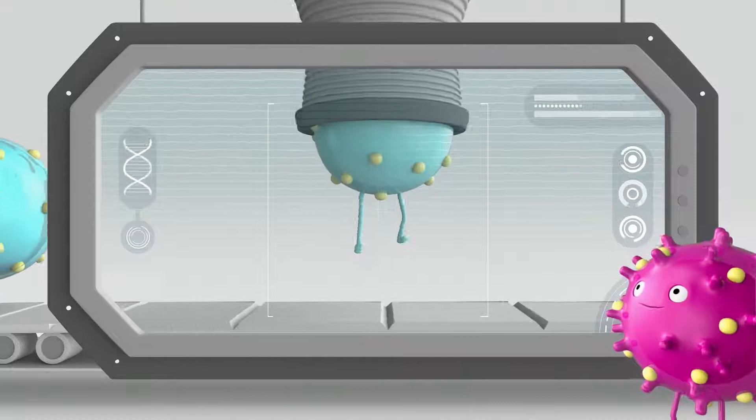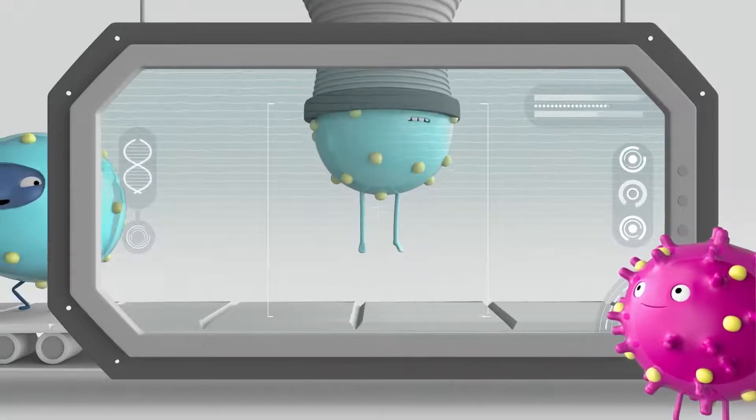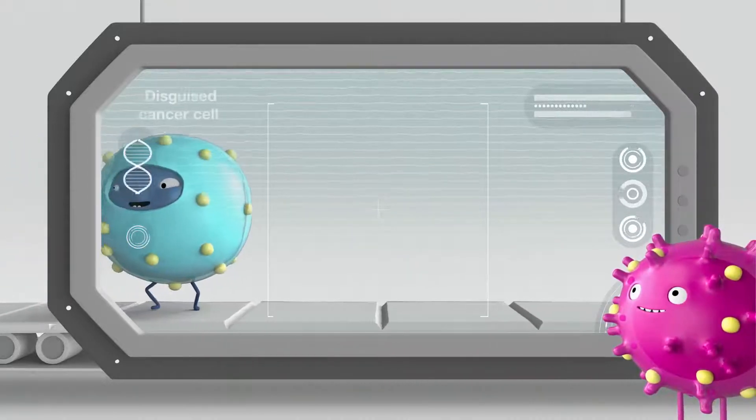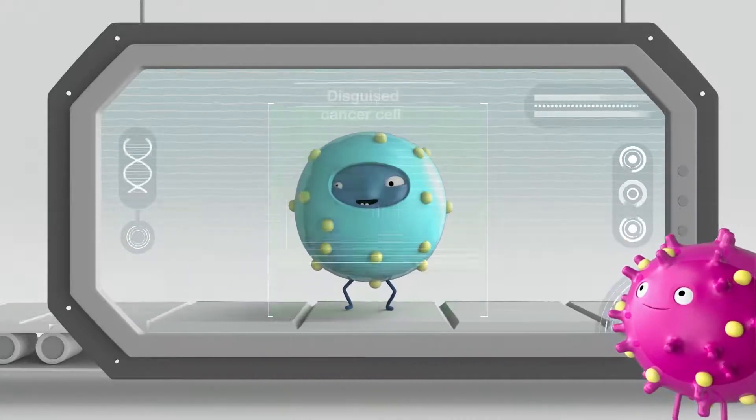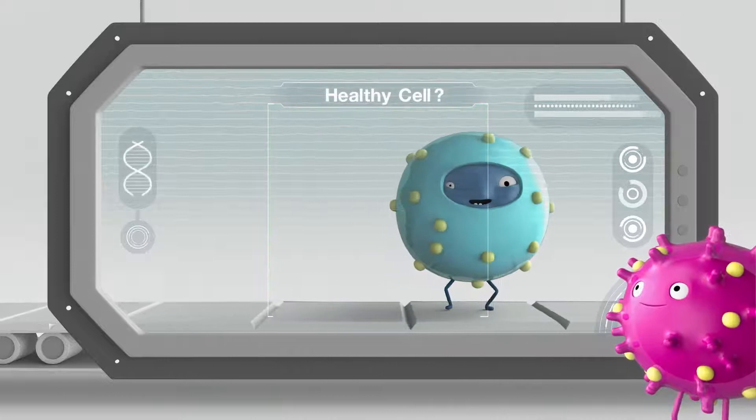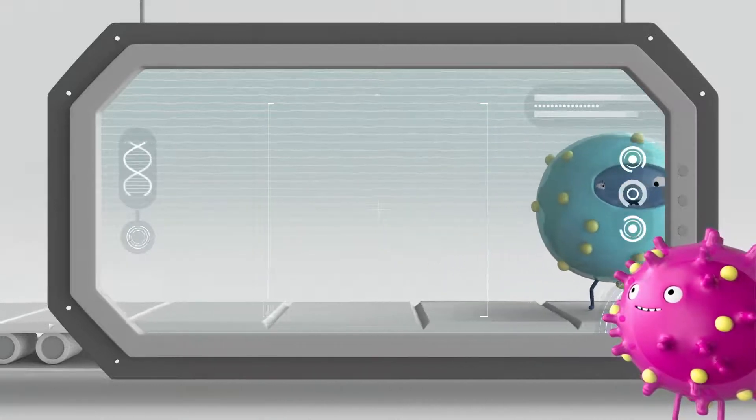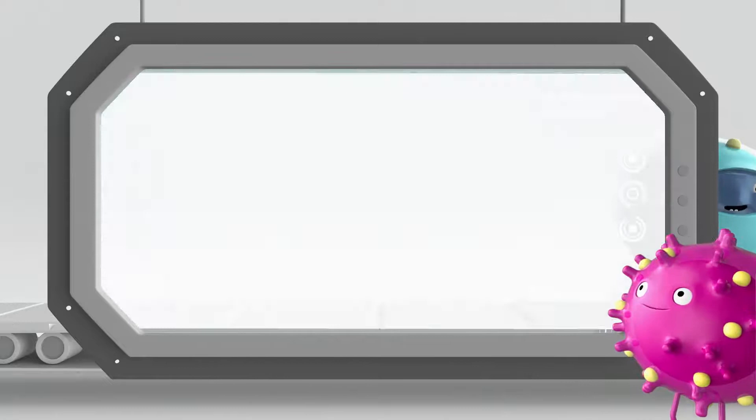Otherwise, your healthy cells could get damaged by mistake. Unfortunately, some cancer cells are smart and can use these same checkpoints to their own advantage. This allows cancer cells to hide from your immune system and avoid being destroyed.